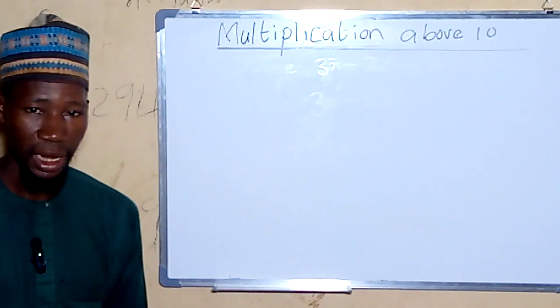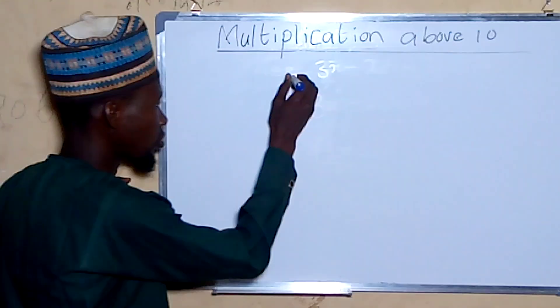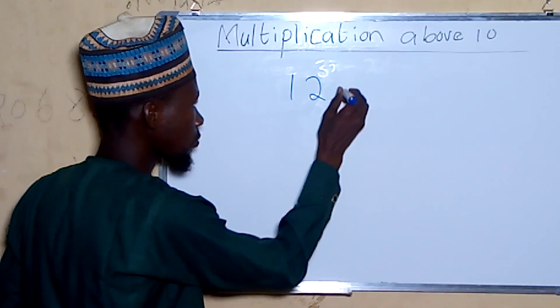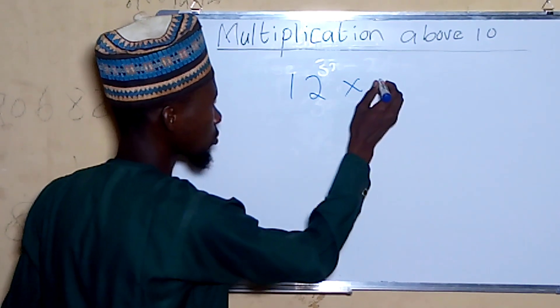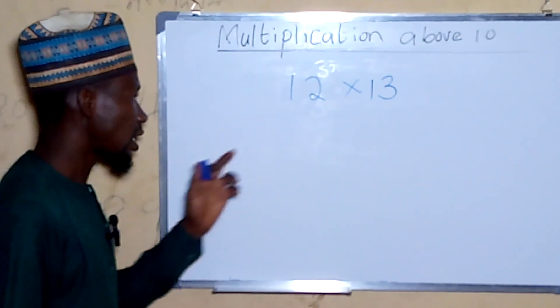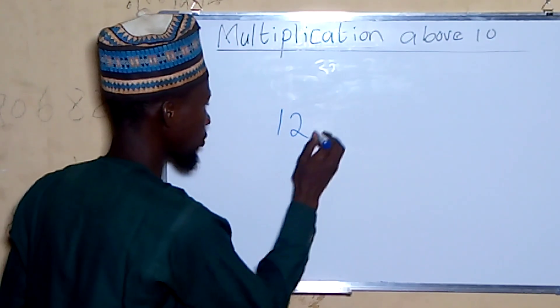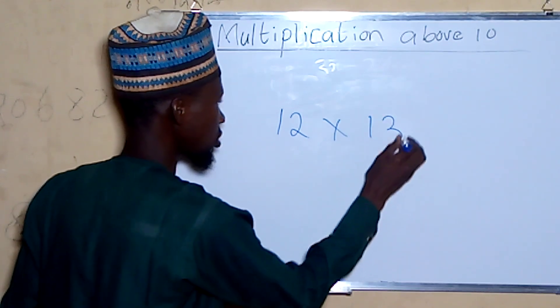I'll show you how to work out problems when you don't know the answer immediately. We'll use 12 times 13 as an example.